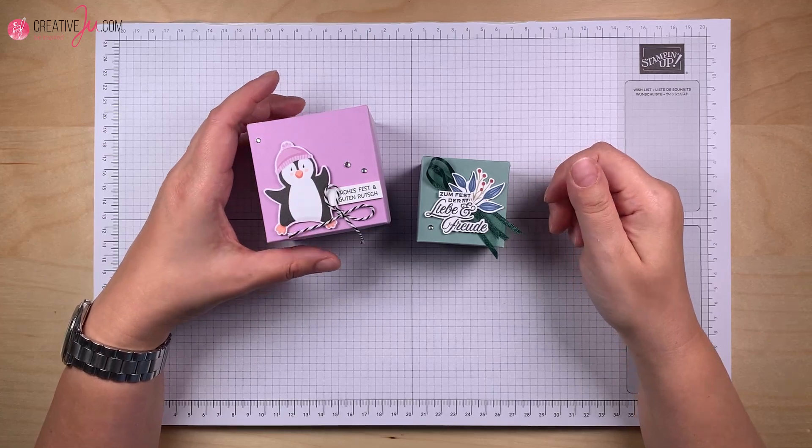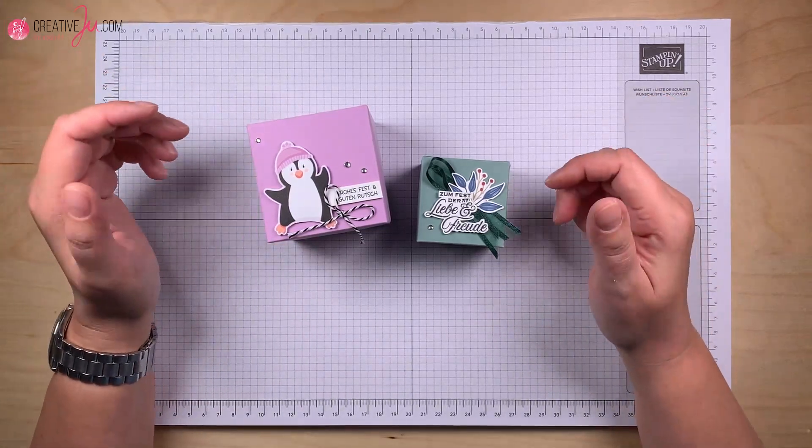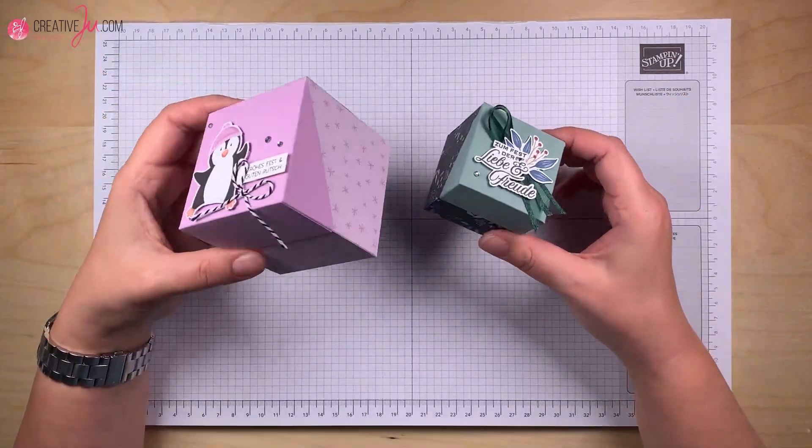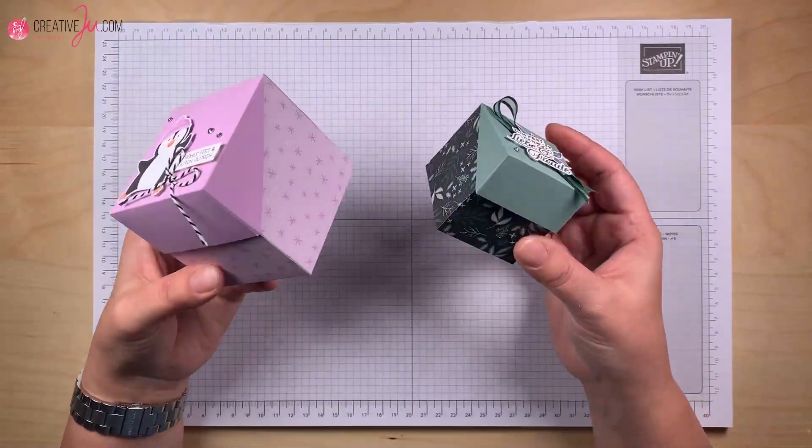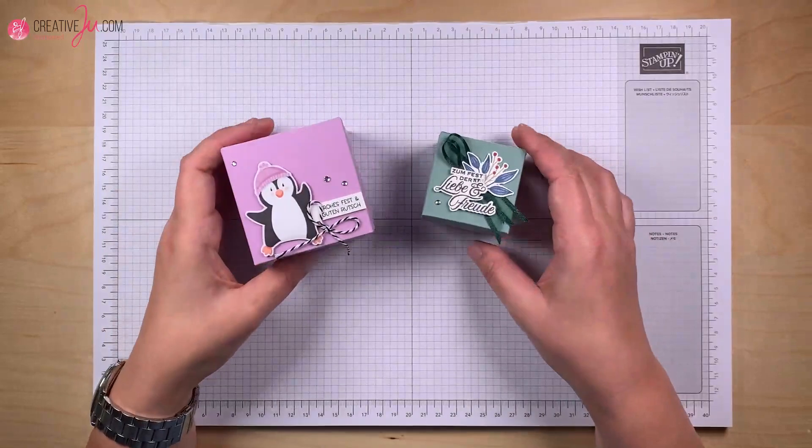Hallo, hier ist die Julia von Stempel mit Creative View. Willkommen zu einem neuen Video von mir. Heute habe ich wieder mal eine Box vorbereitet. Es ist eine Box mit einem schrägen Deckel und ich habe diese hier direkt in zwei Größen vorbereitet.